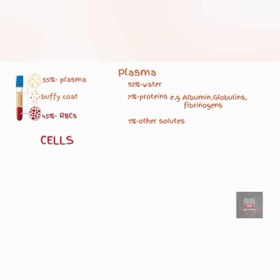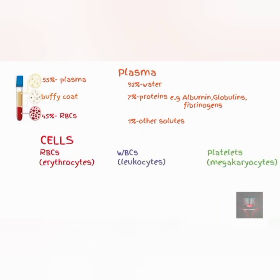The formed elements of the blood include three principal components: the red blood cells, also known as the erythrocytes; the white blood cells, also known as the leukocytes; and the platelets, also referred to as thrombocytes. The white blood cells are further divided into neutrophils, basophils, eosinophils, monocytes, and lymphocytes.